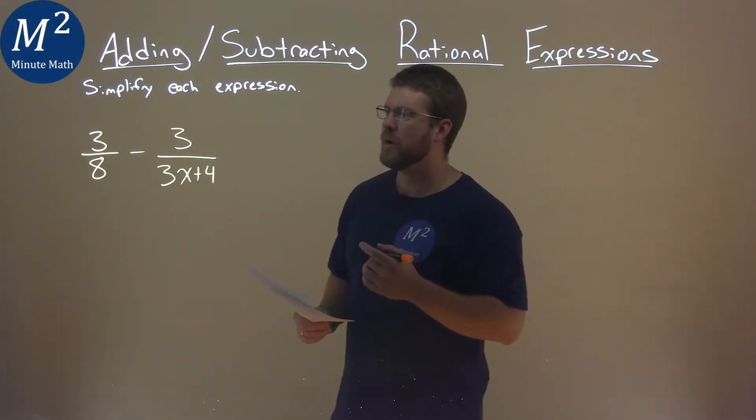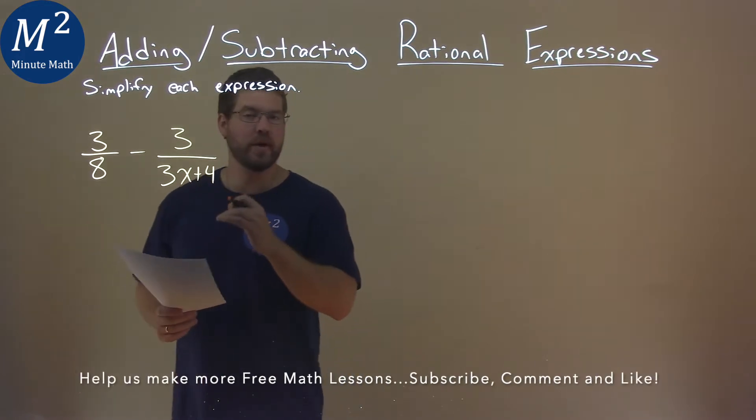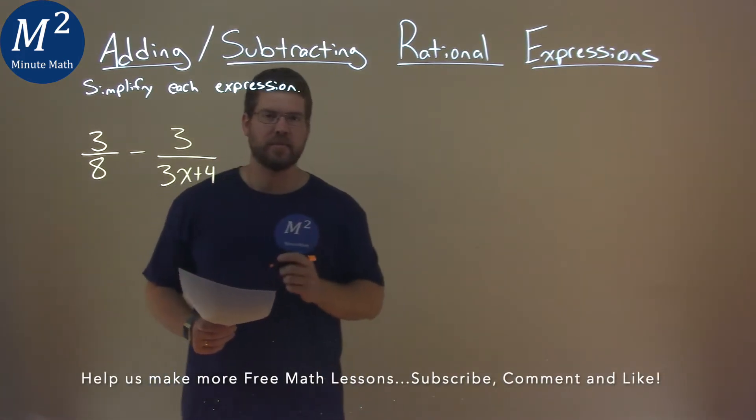We're given this problem right here, 3 over 8 minus 3 over 3x plus 4, and we've got to simplify this expression.